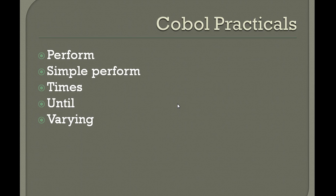Today we are going to show you what is the importance of PERFORM and how do we write a COBOL program using PERFORM. PERFORMs are divided into multiple types like simple perform, times, until, and varying. PERFORM is a command that is used to control a transfer from one paragraph to another paragraph, execute certain statements there, and then send the control back to the original paragraph.